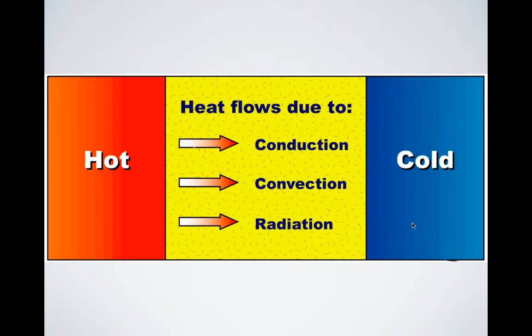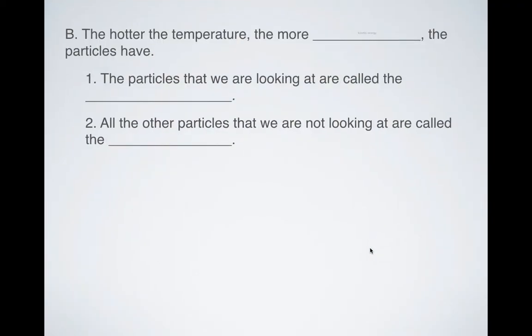And so again, hot to cold, always, the heat is always going to flow from hot to cold. You can't go backwards. And conduction, convection, and radiation are the three methods that heat flows through.